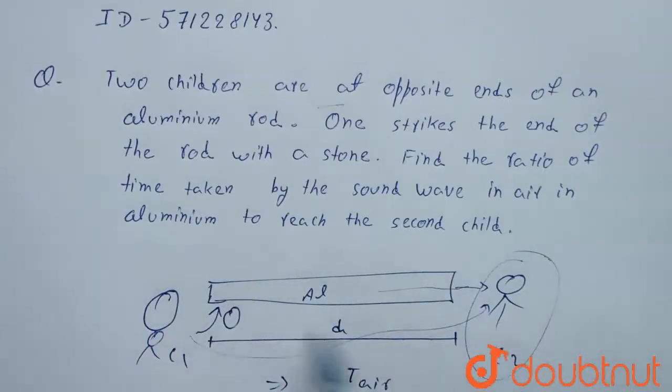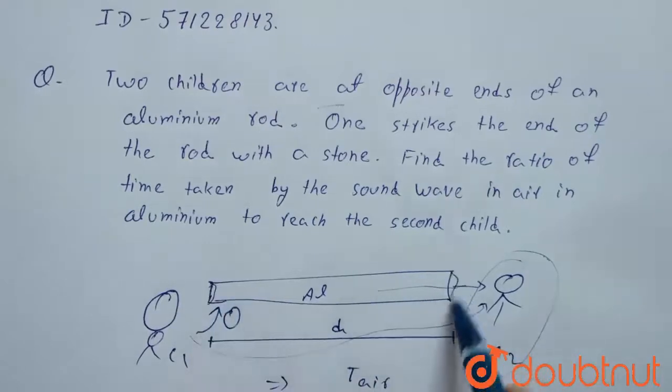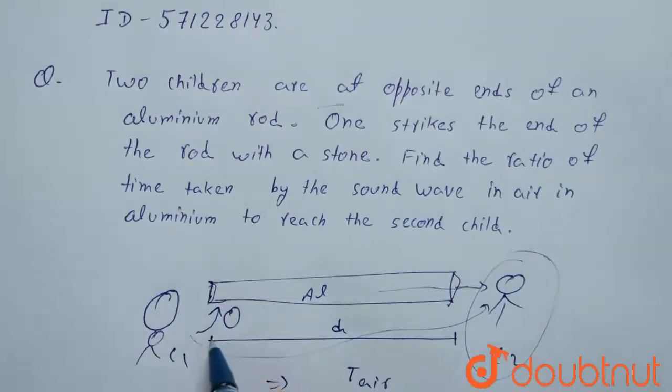Suppose these are two children at the end of an aluminium rod. Let's say distance or length of the aluminium rod is D. I am assuming it. It is not given in question.